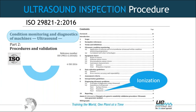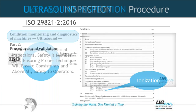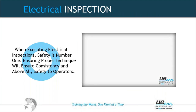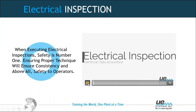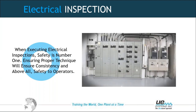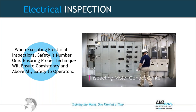A very common question we receive is whether we have a standard procedure to perform the inspection. Yes — we have an ISO standard with recommendation procedures and validations. The ISO reference is ISO 29821-2:2016, section 9.2.3, which talks about diagnosing ionization-related problems. Now I'm going to play a video showing one of the inspection techniques used for the inspection of indoor panels.